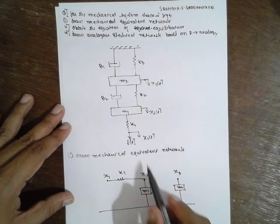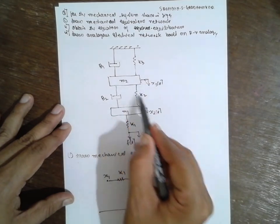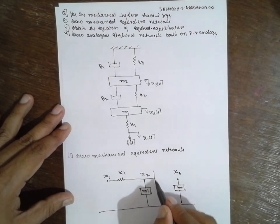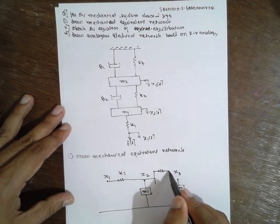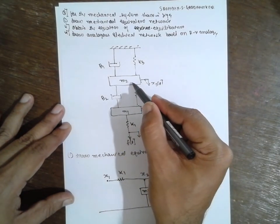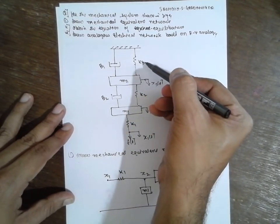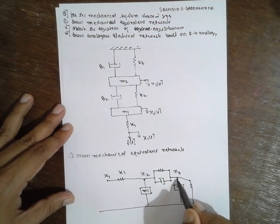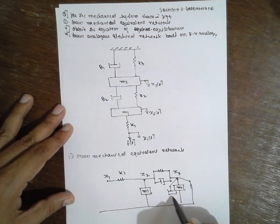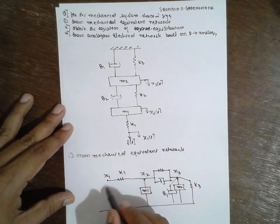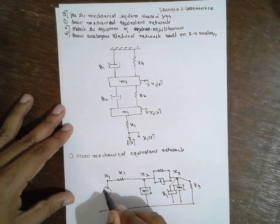In between node 2 and node 3, a spring and dashpot are provided. For node 3, spring K3 and dashpot are provided, connected along with B1, and F(t) is applied here.